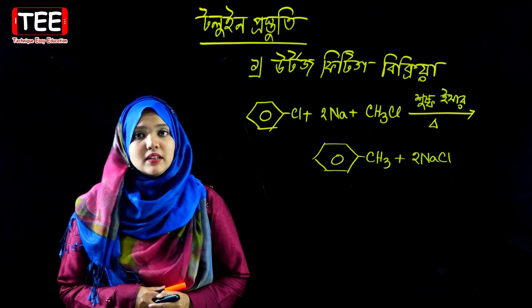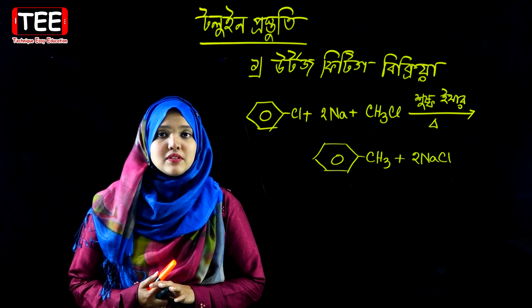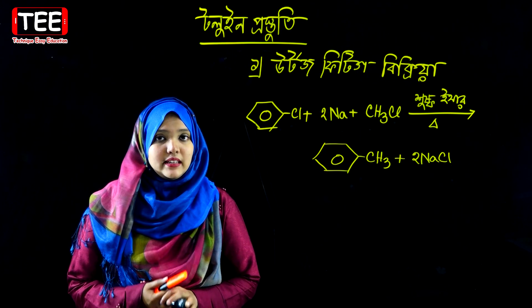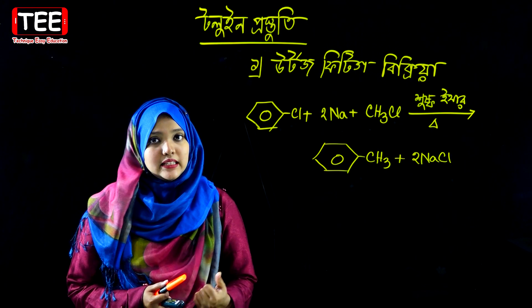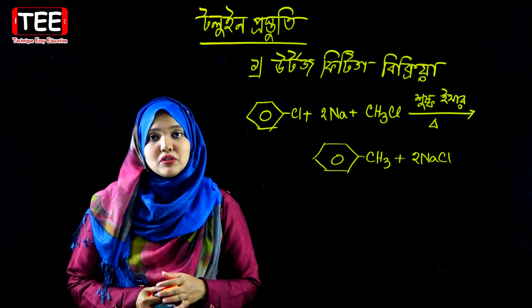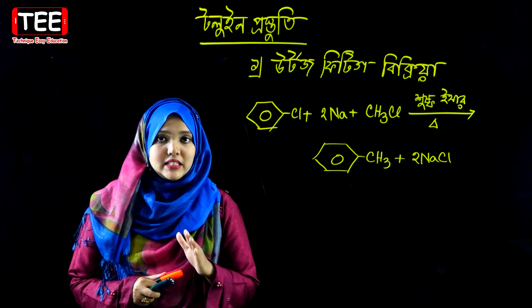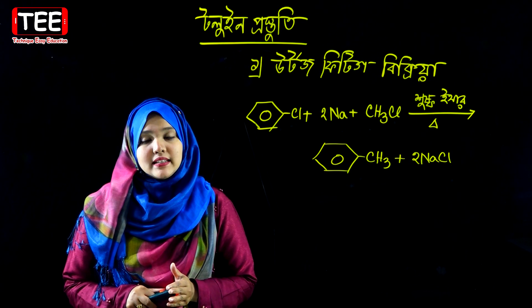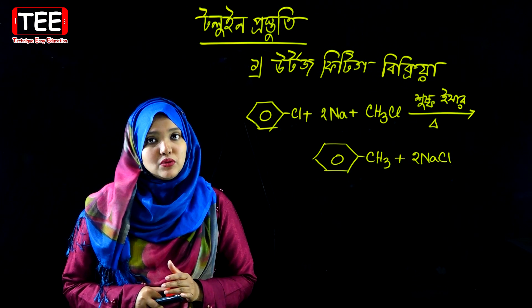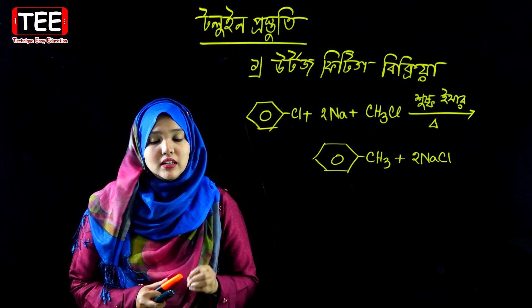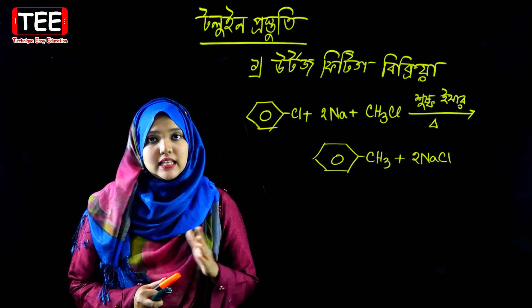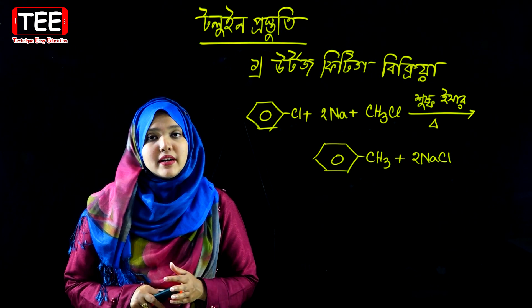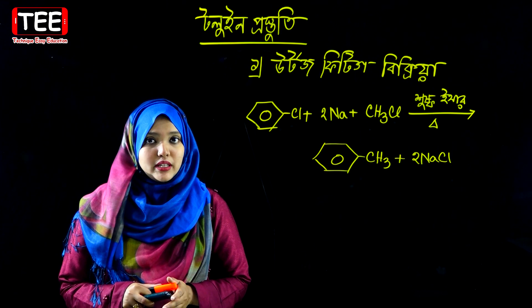Friedel-Crafts Alkylation — we have been using benzene with methyl chloride, benzene with alkyl chloride, and mercury. For toluene, we have been using aluminum chloride.